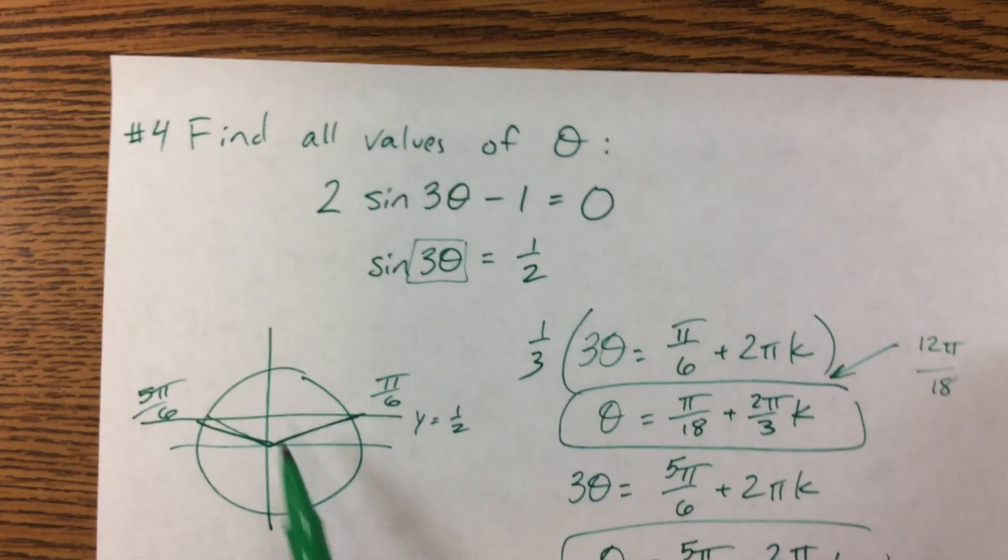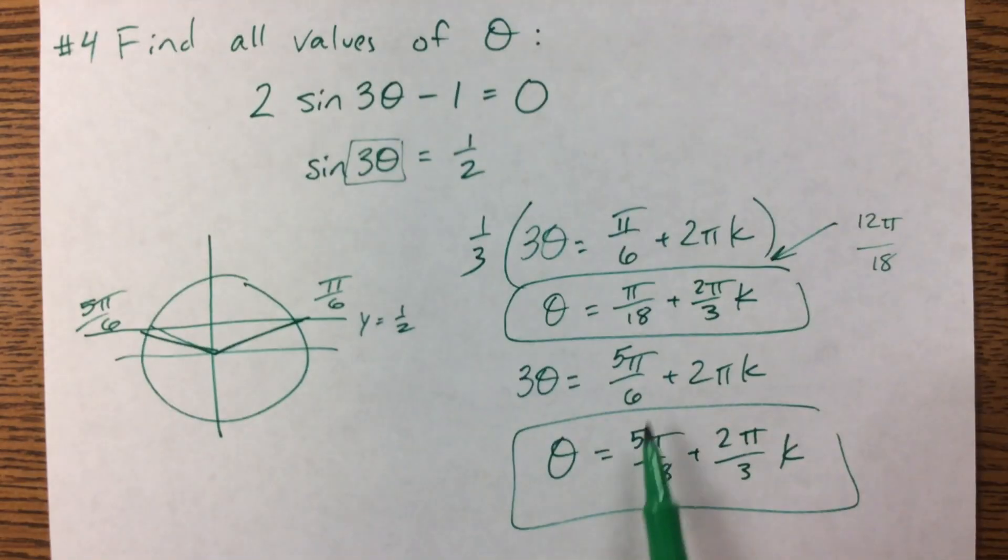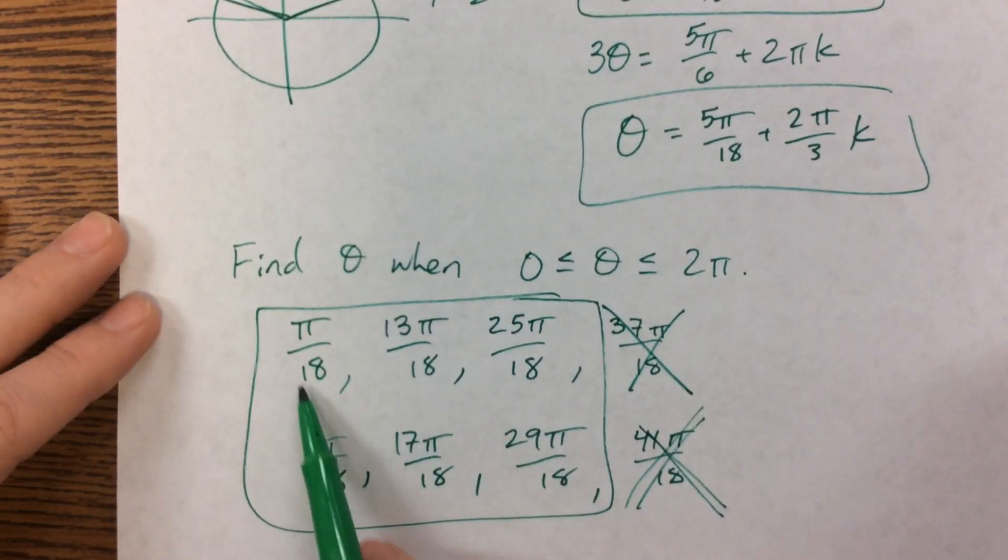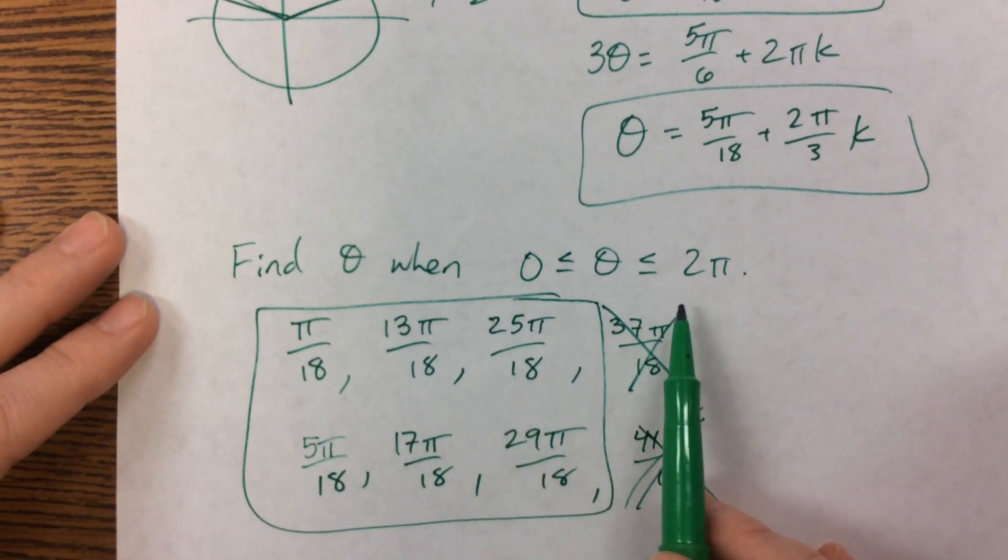Notice, though, I kind of extended. The original question said find all. Well, there was all. And this is the one. These are the ones that would just be between 0 and 2 pi.